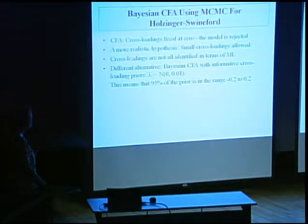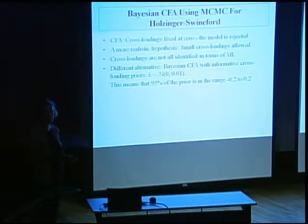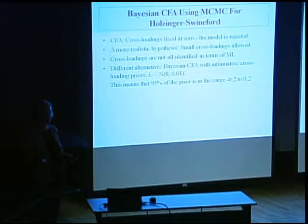Summarizing: cross-loadings were fixed at zero and the model was rejected in CFA. A more realistic hypothesis would be to allow small cross-loadings. We know we're estimating small cross-loadings, and if we could allow those, it would be a much more realistic depiction. But we can't do that in maximum likelihood — if we allowed all cross-loadings, the model would not be identified. So we're in a problem situation.